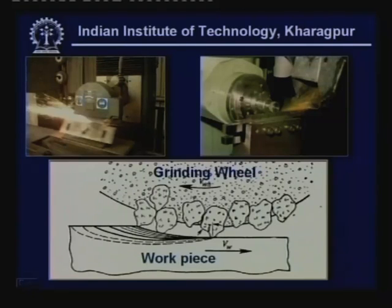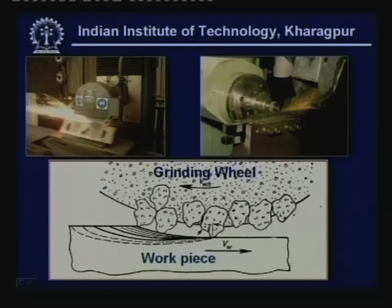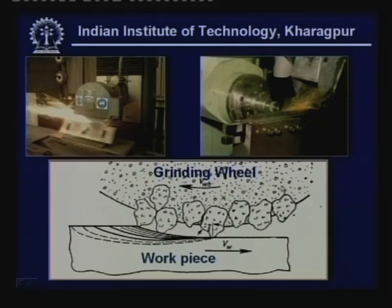Abrasive grits in large numbers, suitably bonded with a binding agent and in the form of a wheel, actually perform the function of grinding. These grits are abrasive particles bonded in a cementing medium, removing the work material in the form of fine layers in a step-by-step mode.